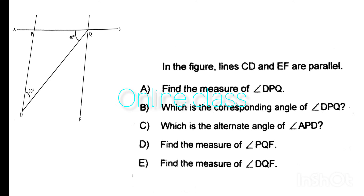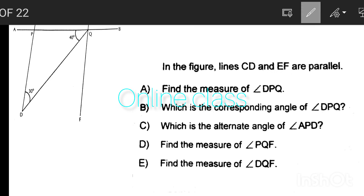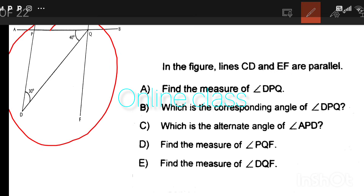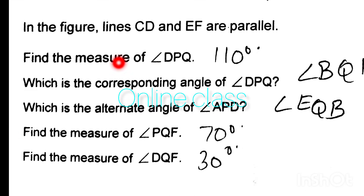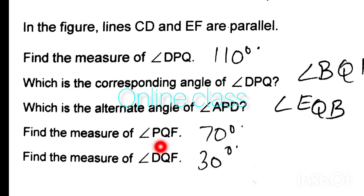Activity 5. Lines CD and EF are parallel. Find the measure of angle DPQ, which is the corresponding angle and alternate angle of APD. Find the measure of PQF, which is the corresponding angle of BQF and the alternate angle of APD. The measure of PQF is 70 degrees and DQF is 30 degrees.